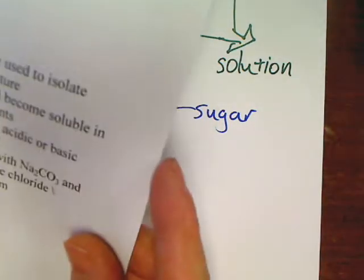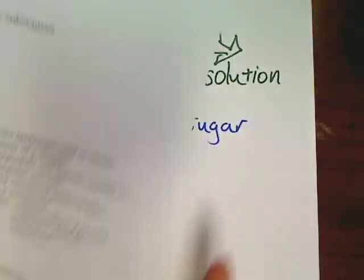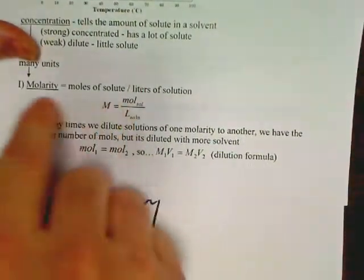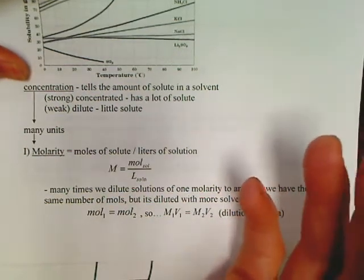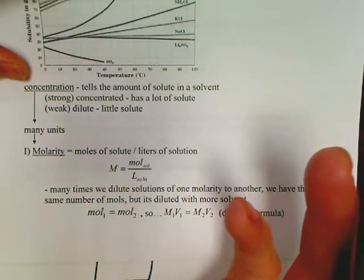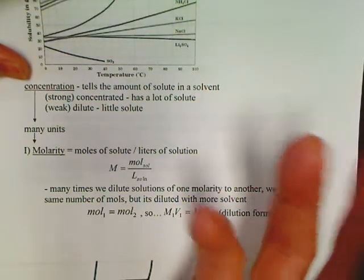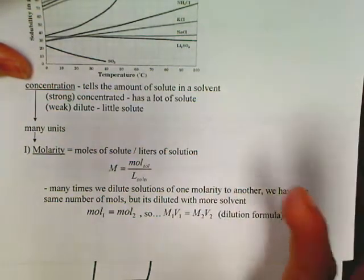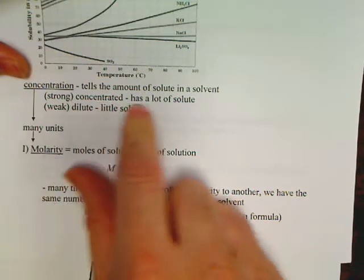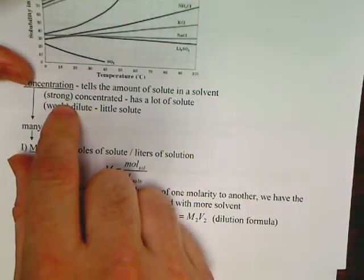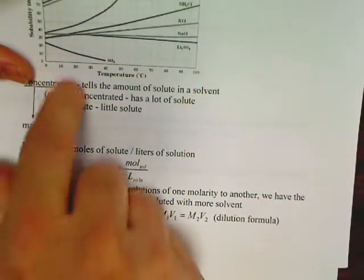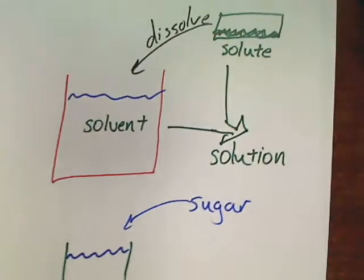We're going to go straight and start looking at the problems. How do we measure how strong a solution is? You hear people talk about concentration — for example, strong coffee. I like to throw in a scoop per cup, which makes a concentrated solution with a lot of solute, whereas weak coffee might be more dilute. We can't just use the words strong and weak; we need a mathematical term, and that's where molarity comes into play.